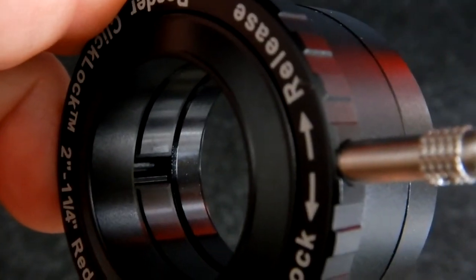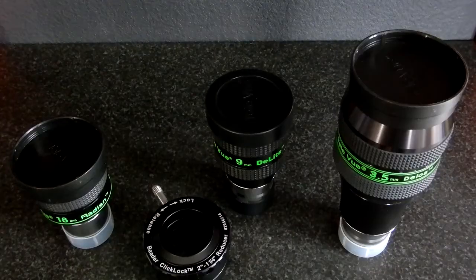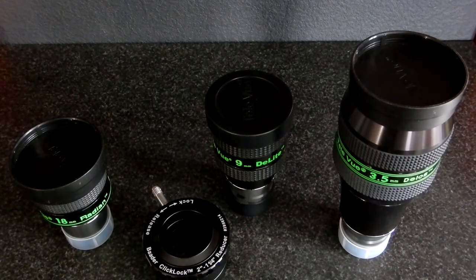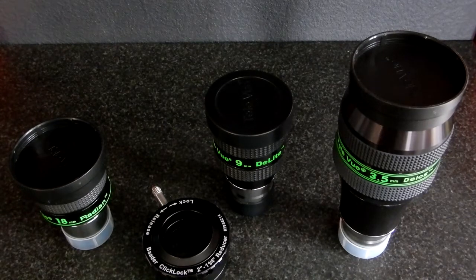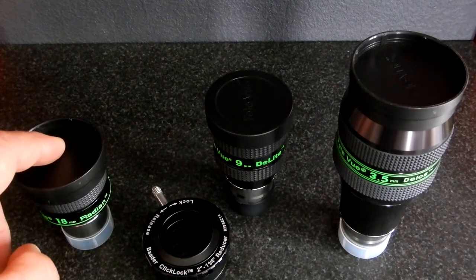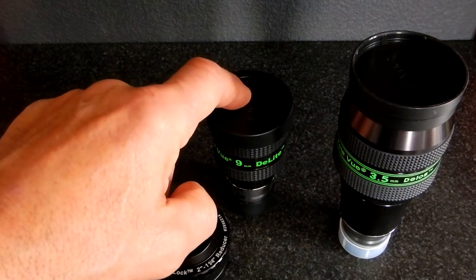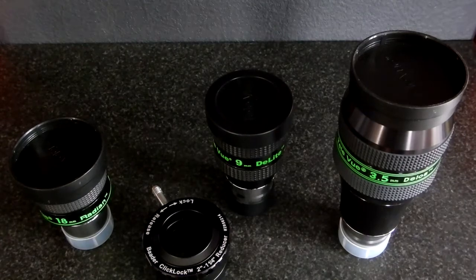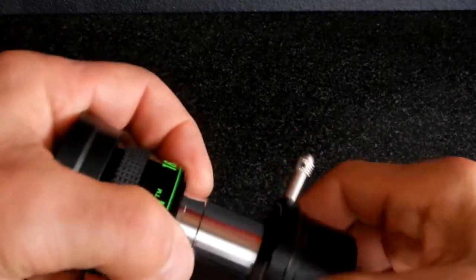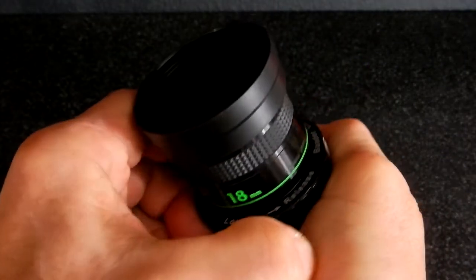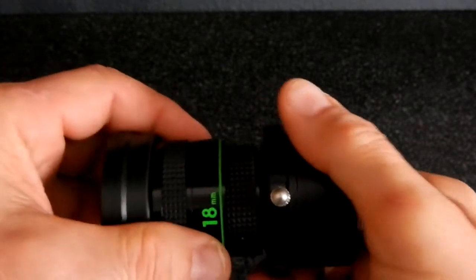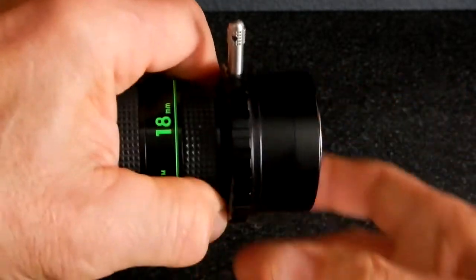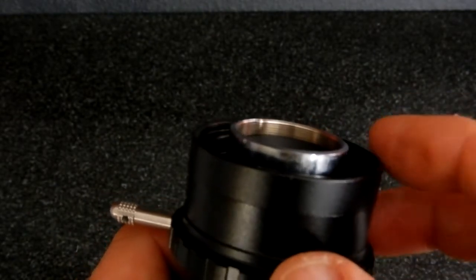Now I want to check the holding power of the Baader. What I've got here is the same eyepiece as I used when I tested those other three from the other manufacturers: an 18 millimeter Radian, a 9 millimeter Delos, and a 3.5 millimeter Delos—all three are TeleVue eyepieces. All right, the 18 millimeter Radian, I'm gonna pull the eyeshield out, then I'll pull on it, and that is in there tight.